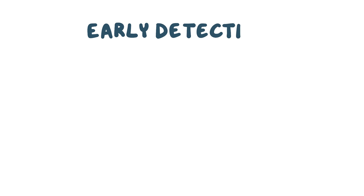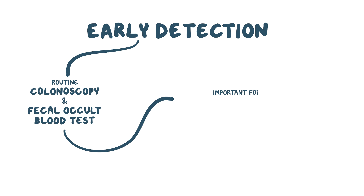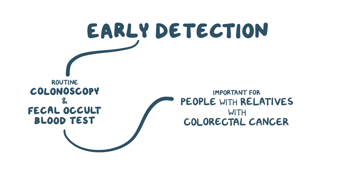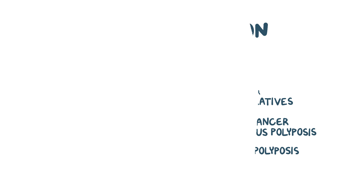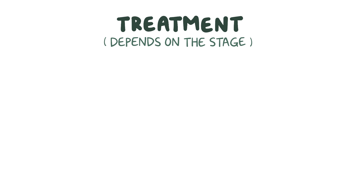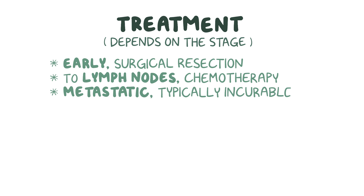To identify colorectal cancer early, routine colonoscopy and fecal occult blood tests can be done to look for neoplastic polyps or early carcinomas so that they can be removed at an early stage. This is particularly important for individuals with relatives that have colorectal cancer, and for those with disorders like familial adenomatous polyposis and hereditary nonpolyposis colorectal cancer. Treatment depends on the stage of the cancer. Early cancers confined to the wall of the colon are often surgically resected, and those that have spread to nearby lymph nodes are often treated with chemotherapy. Unfortunately, metastatic cancers are typically incurable, but sometimes chemotherapy or surgery can be used to ease symptoms.